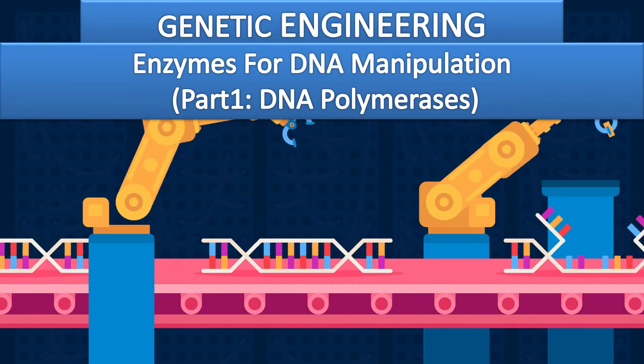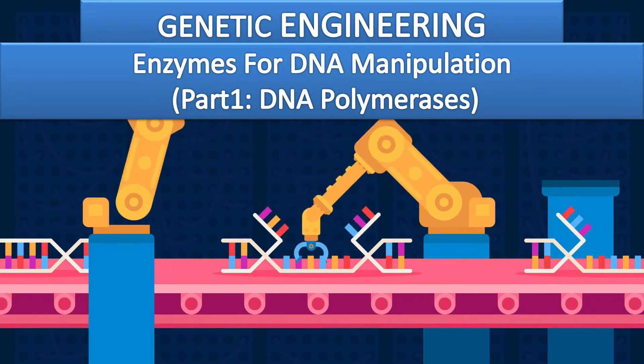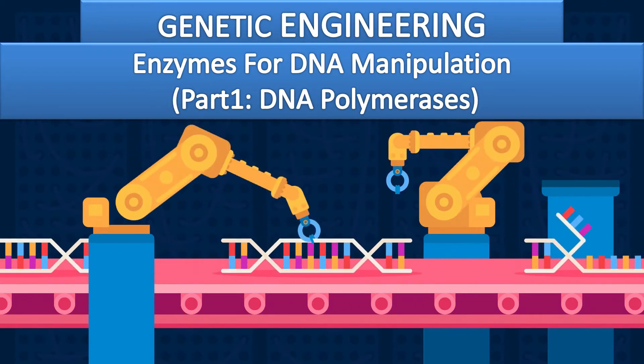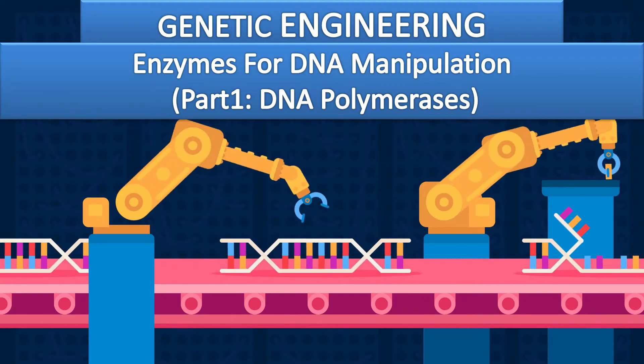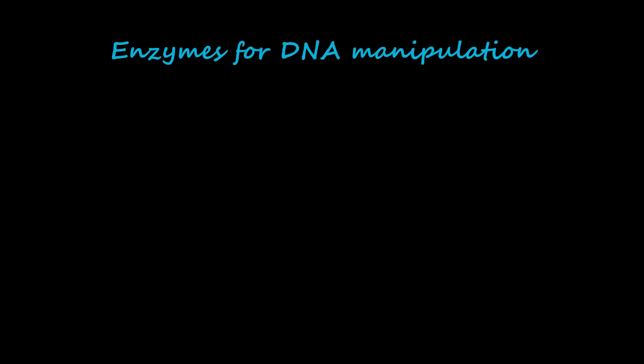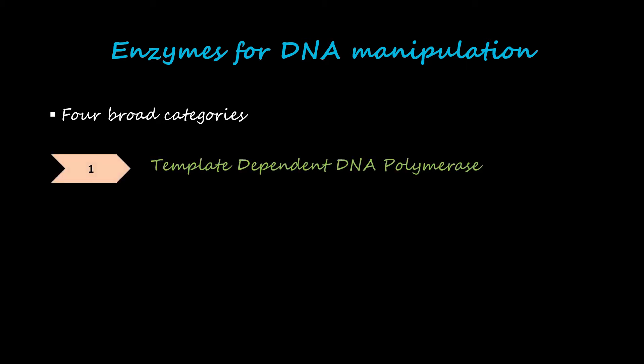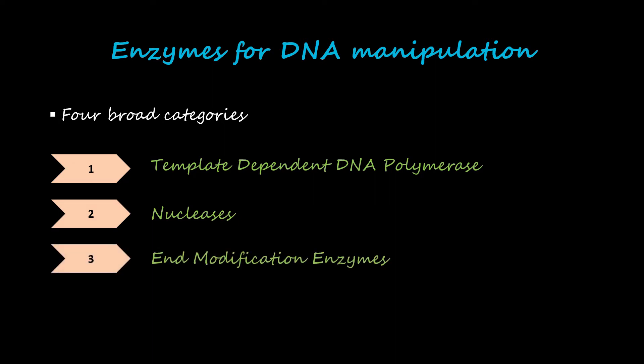Hello and welcome back to our channel. Today we are going to talk about enzymes that are used in DNA manipulation and specifically DNA polymerases. Enzymes used in recombinant DNA technology fall under four broad categories: template-dependent DNA polymerase, nucleases, end modification enzymes, and ligases. In today's video we are going to specifically discuss template-dependent DNA polymerases.